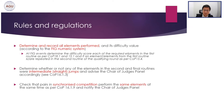In most FIG competitions, the first routine has specific requirements. I will highlight some problematic situations using those first routines as examples. They have different required skills and requirements, and if the gymnast fails to meet those requirements, there will be a penalty of 2.0 points per missing required element, assessed by the difficulty judges.